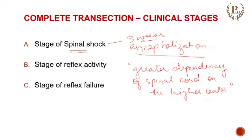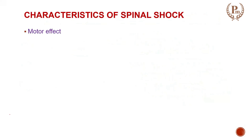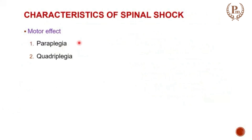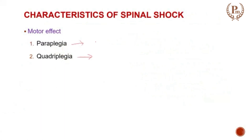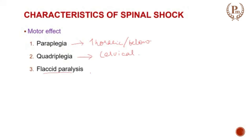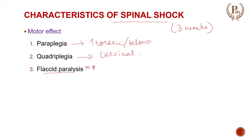Now we will go through each stage and its characteristics one by one. First, looking at motor function: there will be paraplegia or quadriplegia depending on where the lesion is — cervical level versus thoracic or below. The initial stage is also called flaccid paralysis, which is the major feature seen in humans during the first three weeks of spinal shock.